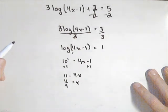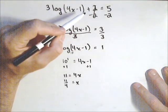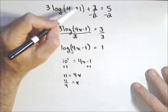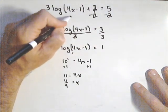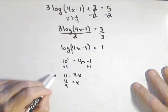Now because we're dealing with a logarithmic equation, the last thing we always wanna be in the habit of checking is make sure it's in our domain. There's another video that goes through finding domain of logarithms. The domain of this is that x has to be greater than 1 fourth. 11 fourths is definitely greater than that, so it checks out.